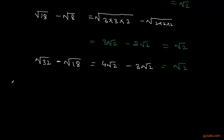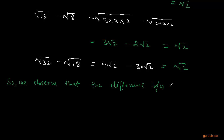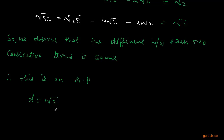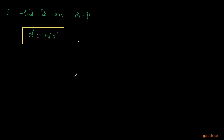We observe that the difference between each two consecutive terms is the same. Therefore, this is an AP and the common difference D is √2.